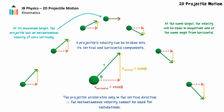Why do we need to break the velocity into components at all? Because the projectile accelerates and therefore changes velocity in only one direction, we can only apply the acceleration of freefall to the velocity in the vertical direction. Therefore, the instantaneous velocity cannot be used for calculations.